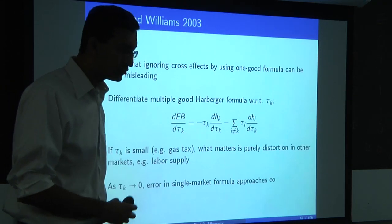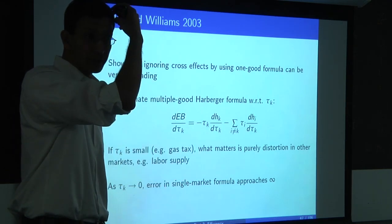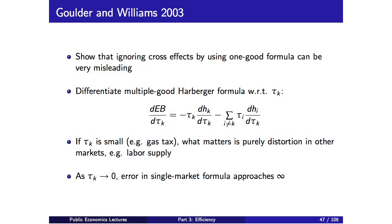Now I want to talk about a recent paper that applies these ideas empirically: Goulder and Williams in the JPE in 2003. Consistent with the intuition described, they show that ignoring cross-effects by using the one-good formula can be very misleading when thinking about the deadweight cost of a tax. They start by differentiating the multiple-good Harberger formula with respect to tau k to ask what is the marginal impact of raising the tax on good k to first order.